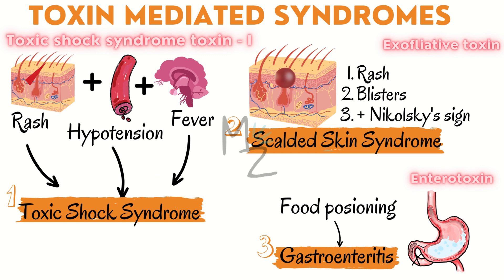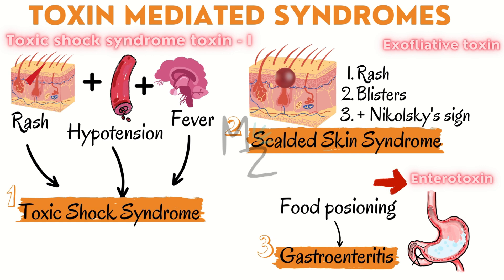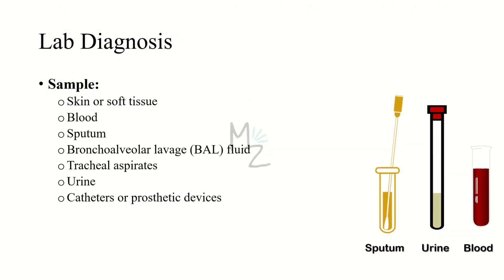Toxin-mediated syndromes: Toxic Shock Syndrome causes rash and redness on skin, hypotension in blood vessels, and fever from the brain — these three collectively cause Toxic Shock Syndrome. Staphylococcal Scalded Skin Syndrome is caused by exfoliative toxin, causing rash and blisters on skin with a positive Nikolsky sign. Food poisoning, diarrhea, or gastroenteritis is caused by enterotoxin.